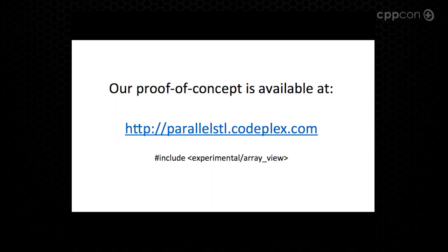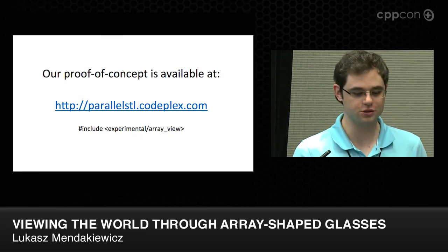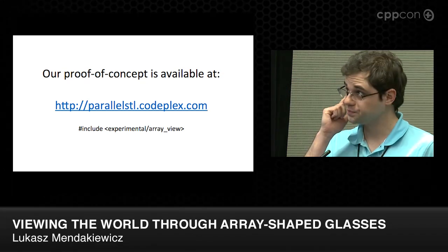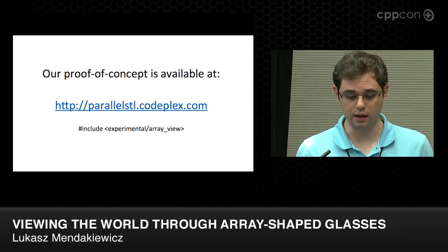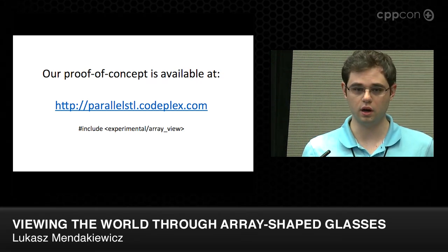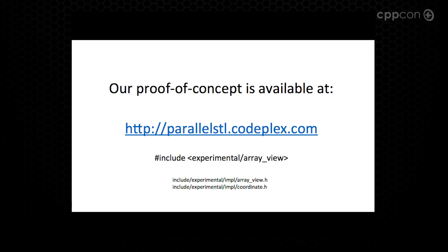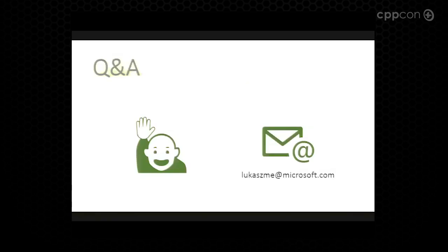Our proof of concept is available online at parallelstl.codeplex.com, the online repository where our implementation of Parallel STL — the C++ Extensions for Parallelism Technical Specification — also lives. The Parallel STL implementation is Windows-only as it relies on some OS primitives, but the array_view part is self-contained and should be portable to different compilers. If you want to use pieces of it, the two relevant headers should run just fine in a modern C++ compiler.